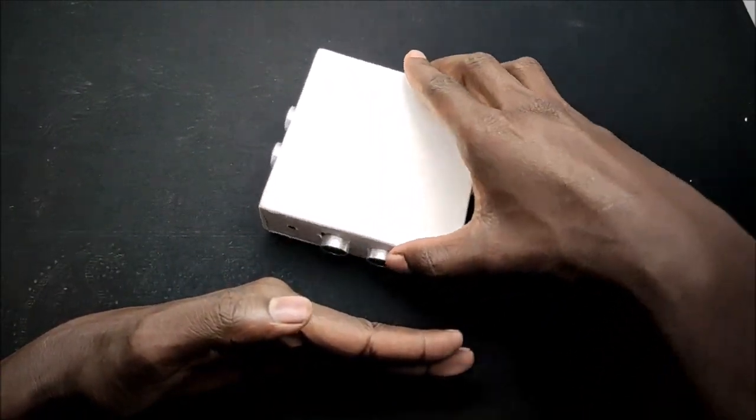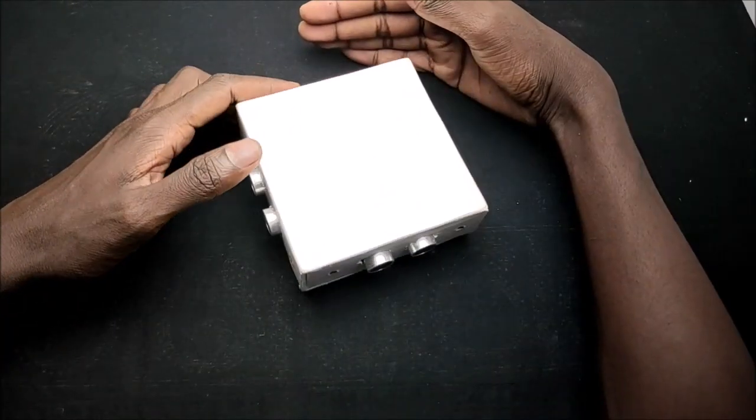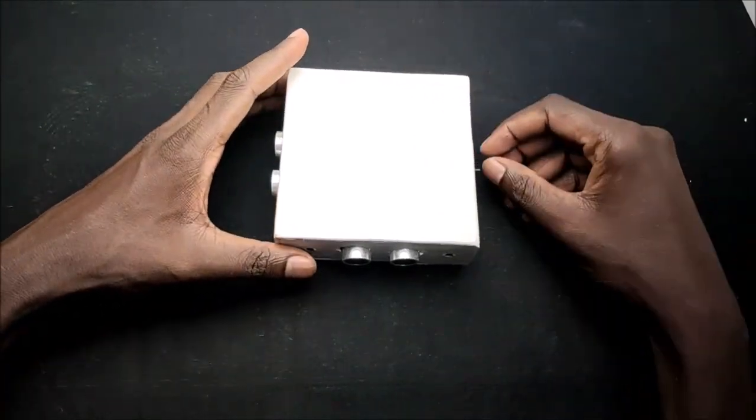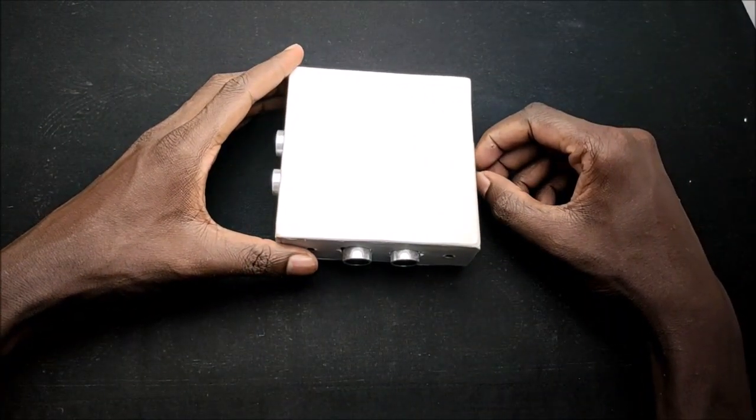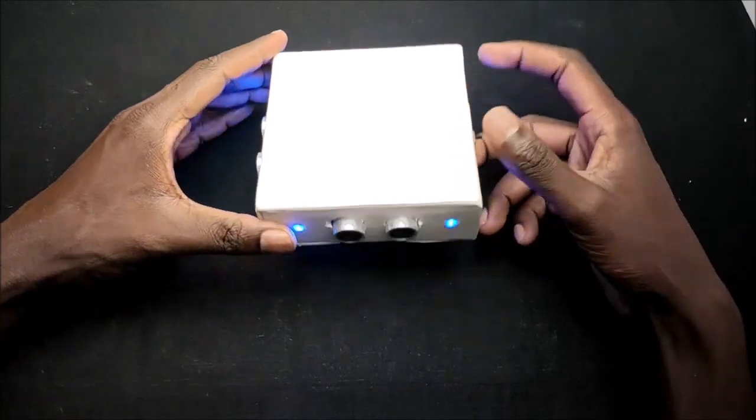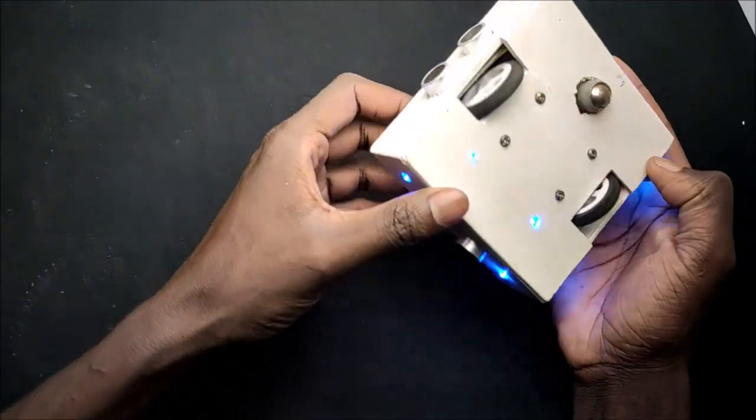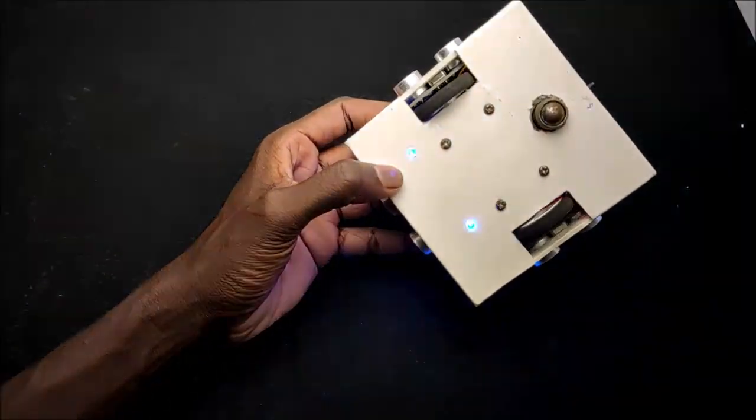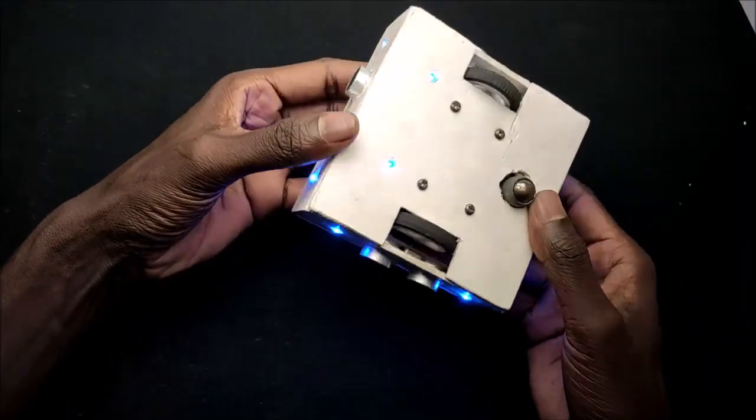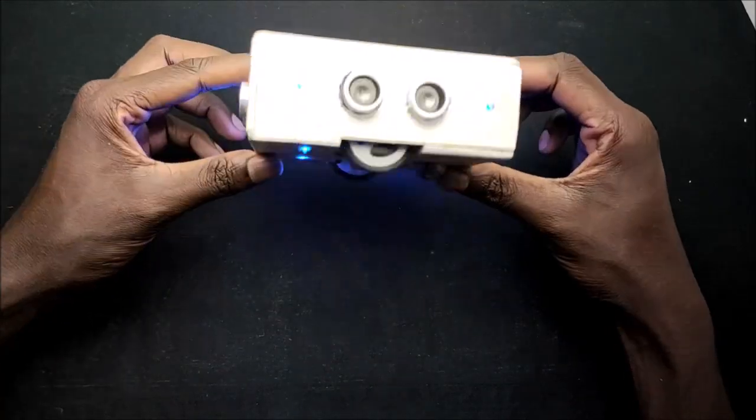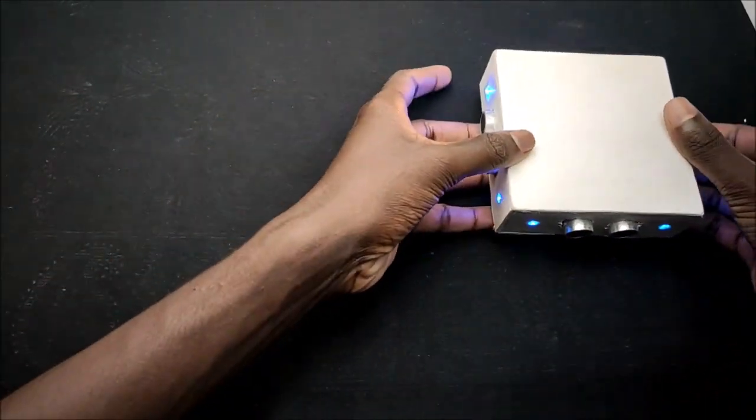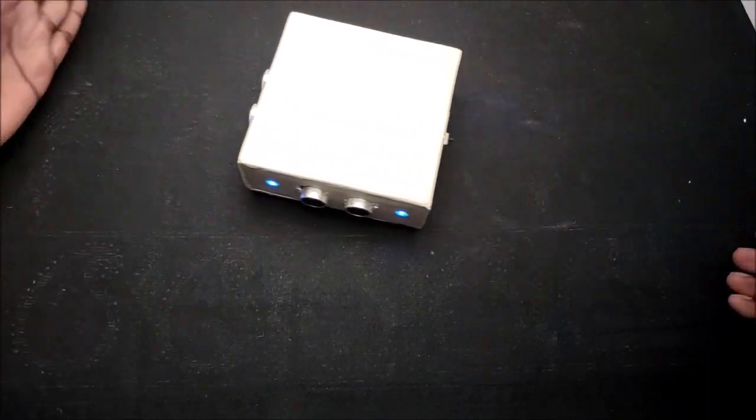the robot automatically turns to another side and avoids obstacles. You can see UVC LEDs on all sides of the robot. These UVC LEDs are responsible for sterilization. This robot is designed to sanitize or sterilize floors and flat surfaces automatically.